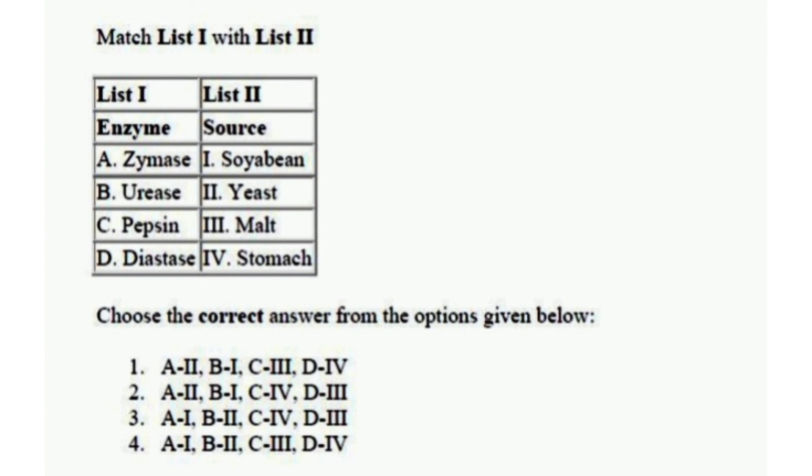The right one is option 2: zymase with yeast, urease with soybean, pepsin with stomach, and diastase with malt.